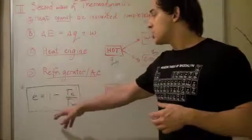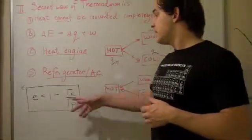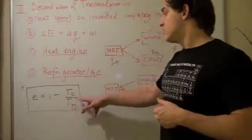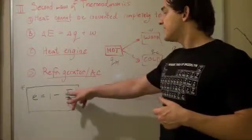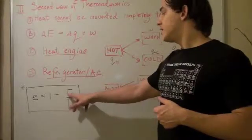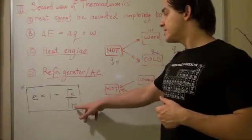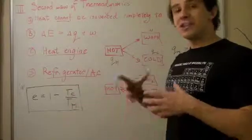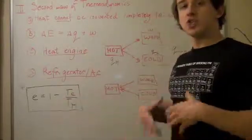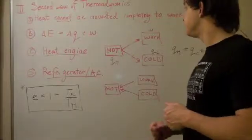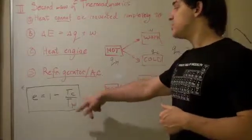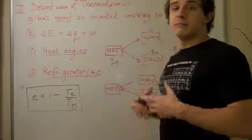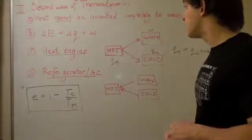This also shows, and you can see from algebra and basic calculus, that as this becomes zero or tends to zero, that is, as TC decreases and TH increases, or the difference between these two increases, the efficiency also increases. You can plug some values in, and you'll see that as this becomes smaller and this becomes larger, that E becomes more efficient.